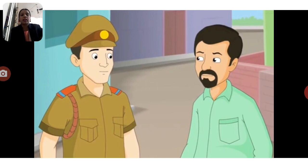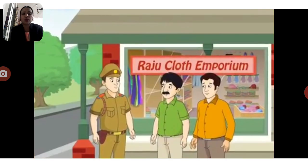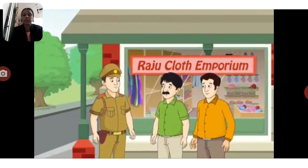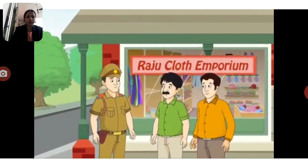Then the inspector asked another witness, Raju the shopkeeper. Raju had seen someone walking very fast, holding a bag, and looking very scared. Raju described that person as short and thin, with curly hair, holding a bag and walking very fast.